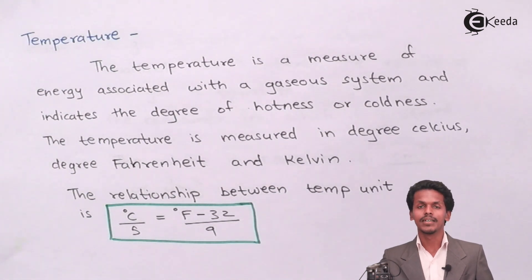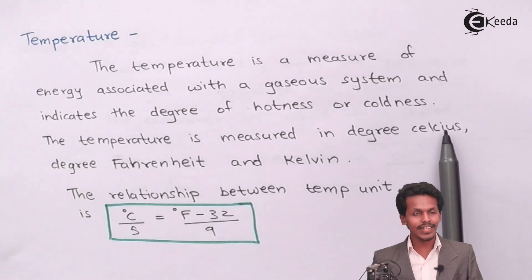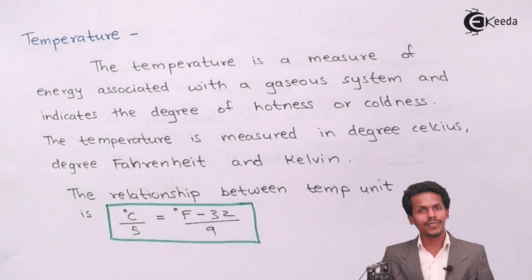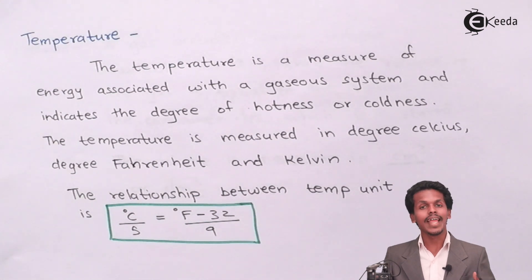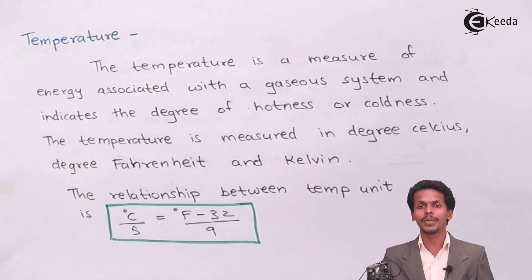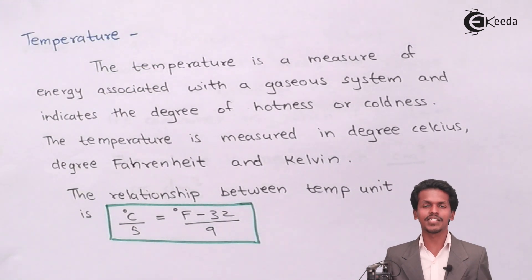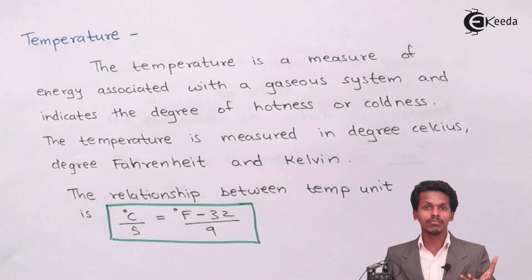The SI unit of temperature is Kelvin. To convert degree Celsius into Kelvin, we add 273. So for example, 1°C equals 1 + 273 = 274 Kelvin. There is a direct relationship: Kelvin = °C + 273.